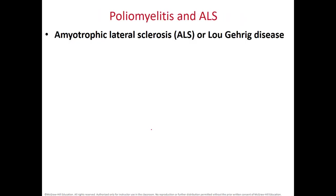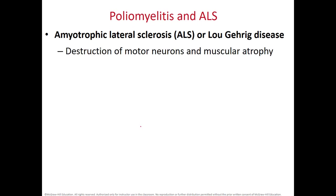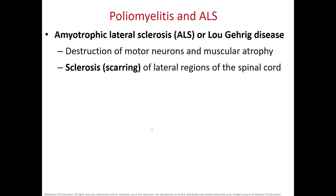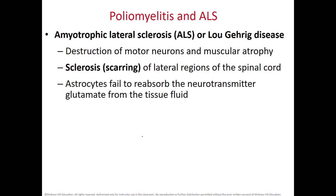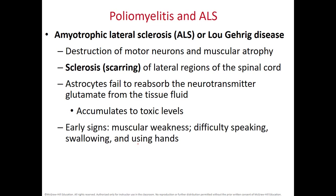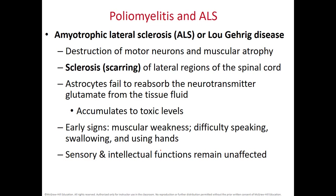The other disorder is ALS, or Lou Gehrig's disease. The motor neurons are being destroyed and muscles begin to atrophy. You see sclerosis or scarring of the lateral regions of the spinal cord, caused by an excess of a neurotransmitter accumulating to toxic levels. Different patients show different rates of progression. Since ALS only affects somatic motor neurons, it does not affect sensations, intelligence, or the gray matter of your brain.